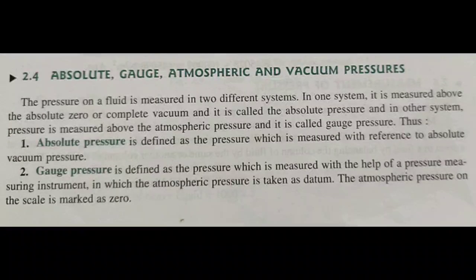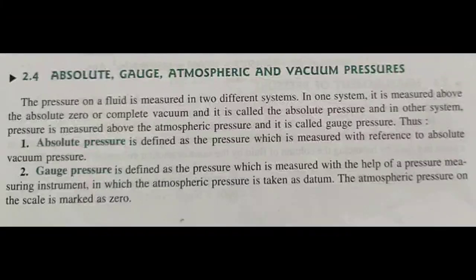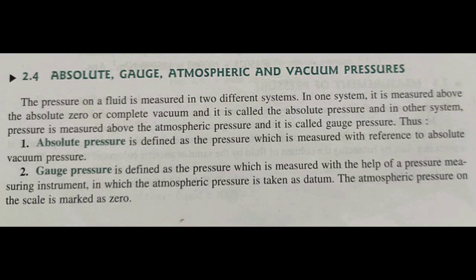The pressure on a fluid is measured in two different systems. In one system it is measured above the absolute zero or complete vacuum, and it is called absolute pressure. In the other system, pressure is measured above the atmospheric pressure, and it is called gauge pressure.